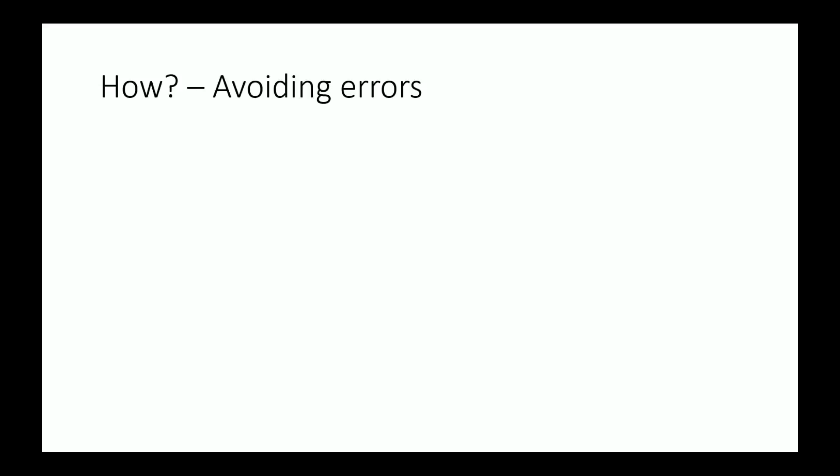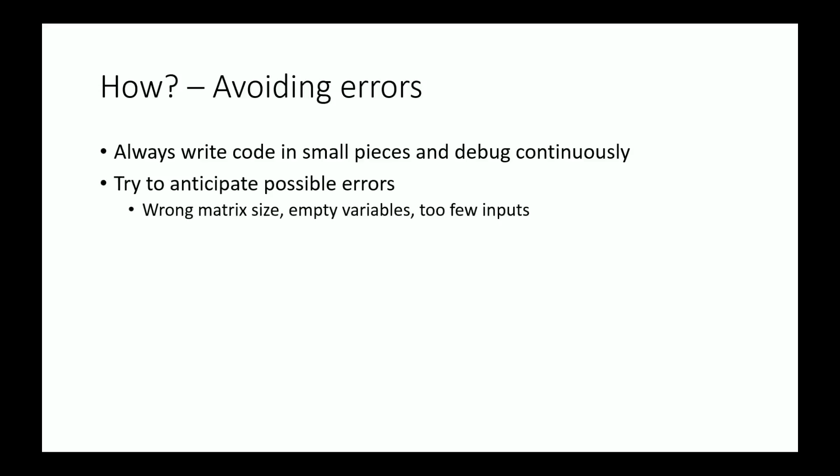So avoiding errors. Well, the best way of handling errors is of course not to get them. But this can be hard to achieve. A better way is to know how to find them early on. And this is the reason why you should try to code in small pieces and debug your code continuously. If you write 300 lines of code and then test if it works, you will most likely have a hard time finding the source of any problems in your code. And you should also try to think about possible errors that can occur and if it can be avoided in any way. And common examples of errors are wrong matrix sizes, empty variables and giving too few inputs to a function.